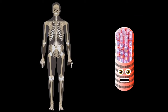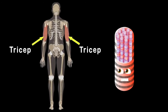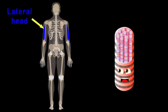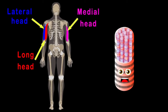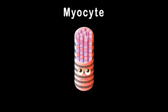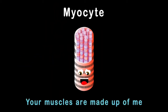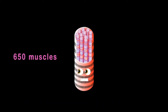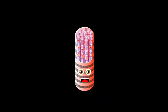We'll take a look at the triceps on the backside of your arm. There's a lateral, long, and medial head which make up the three parts. That concludes the triceps — very complex anatomy. I am a myocyte; your muscles are made up of me. Here's some of the 650 muscles in the human body.